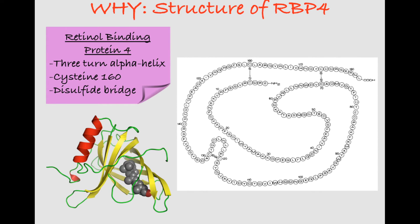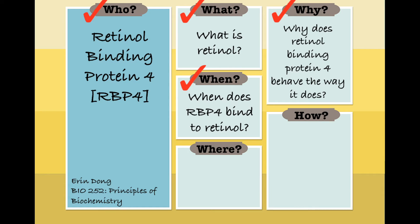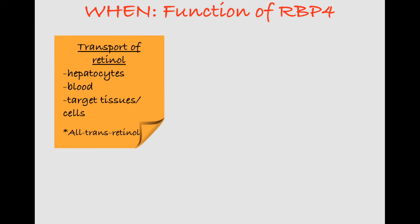The alpha helix ends with a cysteine residue that contributes one disulfide bond to the overall structure. Now, when does RBP bind to retinol? In mammals, almost all retinol found in the blood is bound to RBP. Therefore, this protein can be considered as a regulatory transport mechanism. It keeps retinol levels in the blood and target tissues relatively stable, as dietary intake of vitamin A may undergo some fluctuations.